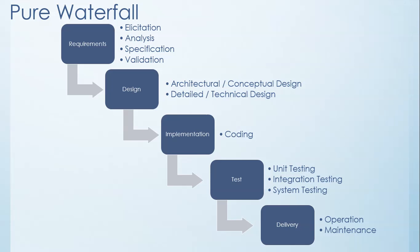The pure waterfall model performs well for product cycles in which you have a very stable product definition and when you're working with very well understood technical methodologies. In those cases the waterfall model helps you find errors in the early, low-cost stages of a project. It provides the requirement stability that many developers crave — we like to know what we're building. If you're building a well-defined maintenance release for an existing product, or you're doing something like porting an existing product to a new platform, the waterfall cycle might be the right choice for you.